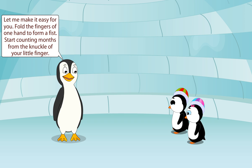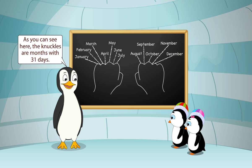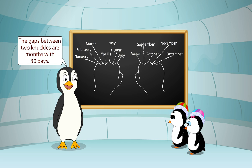Fold the fingers of one hand to form a fist. Start counting months from the knuckle of your little finger. As you can see here, the knuckles are months with 31 days: January, March, May, July, August, October and December. The gaps between two knuckles are months with 30 days: April, June, September, November.